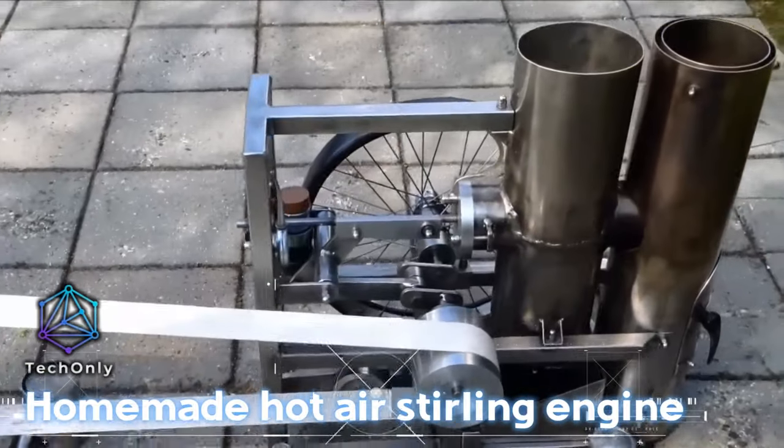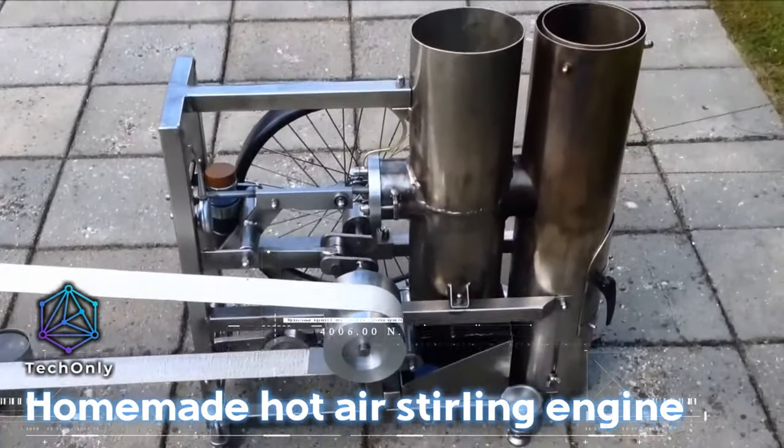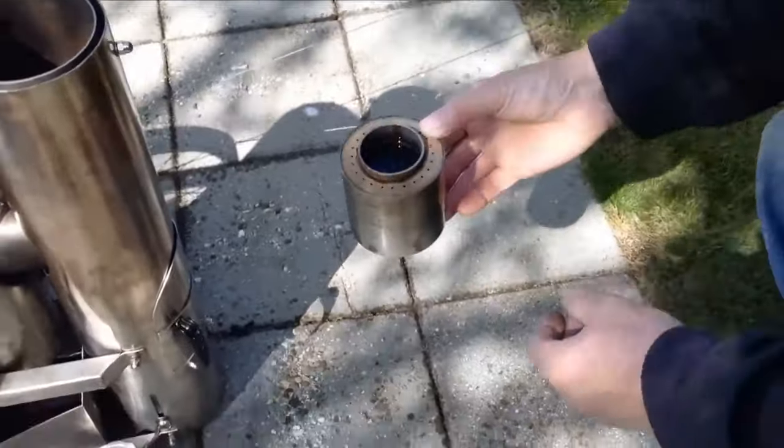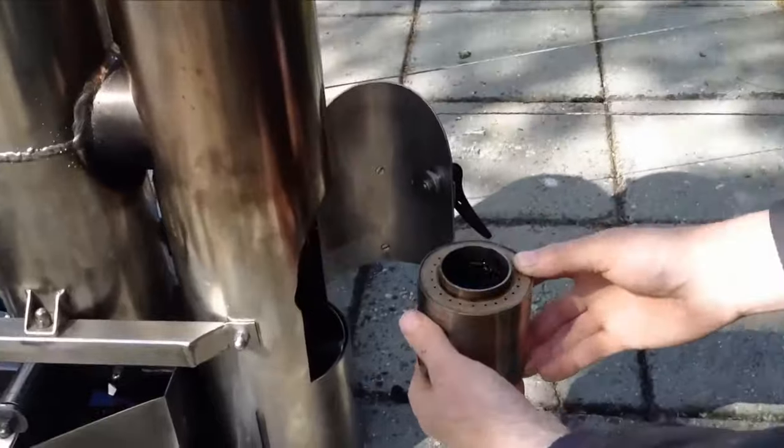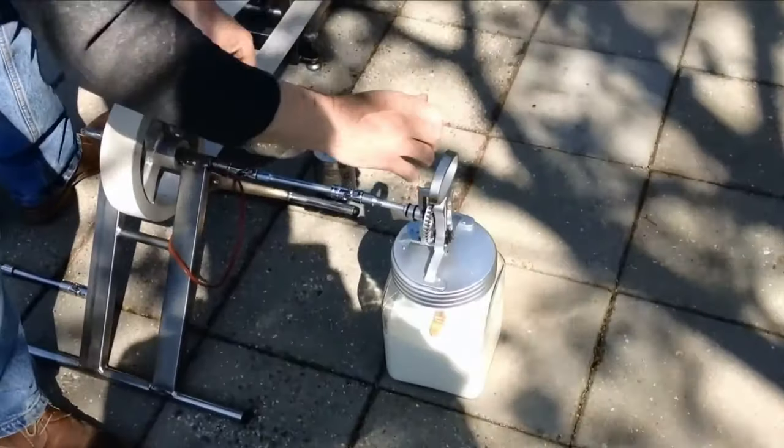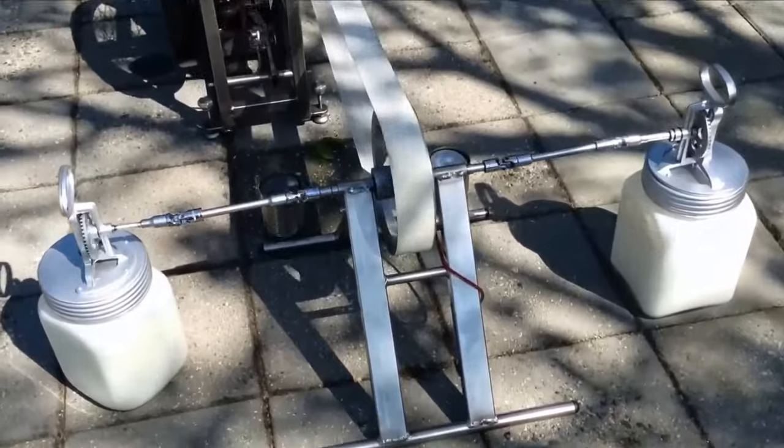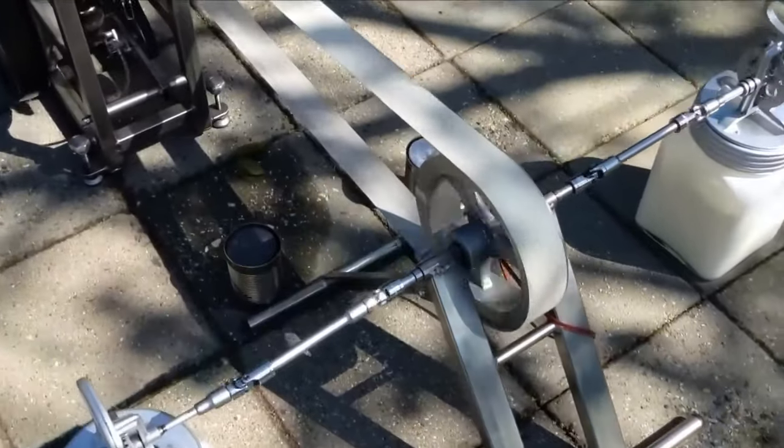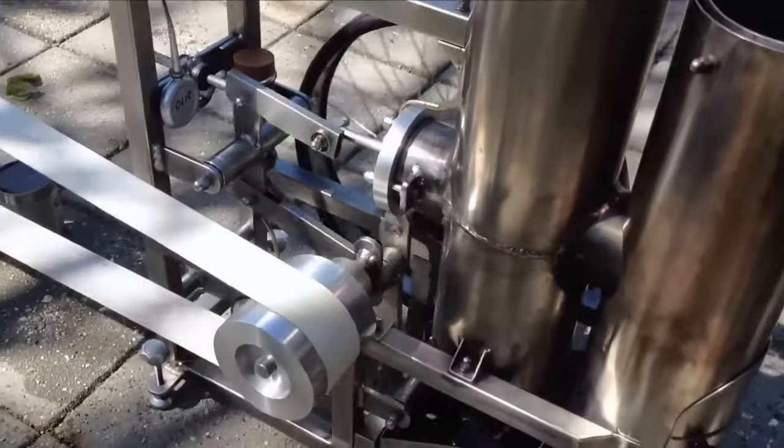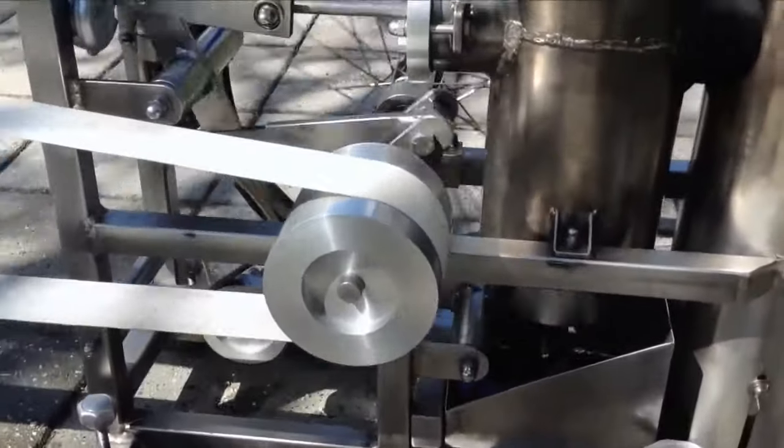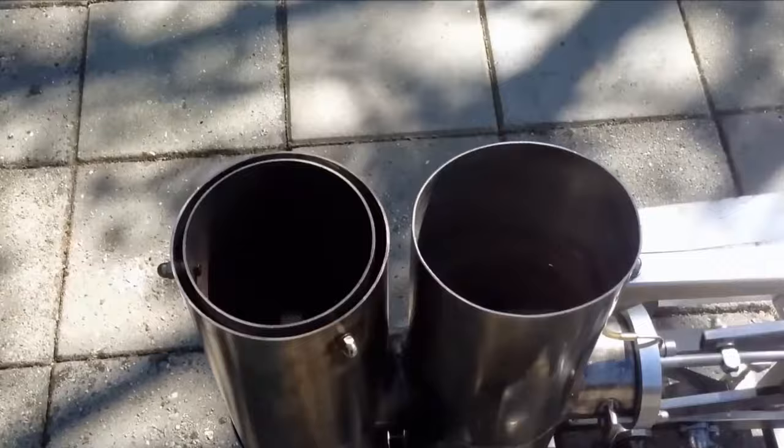This one is a true masterpiece, and the biggest homemade Stirling engine that I could find. It is 317cc, and in this video, you can see that it is used for milk processing. The engine is powered by an external heat source, and it operates using the Stirling cycle. It is impressive to see how efficiently it can convert heat into mechanical work.